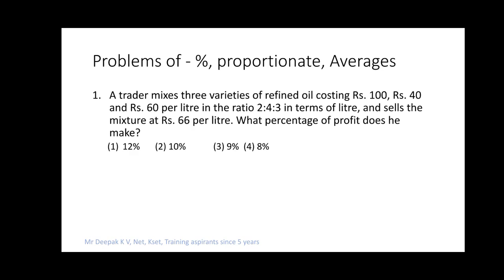A trader mixes three varieties of refined oil costing Rs. 100, Rs. 40, and Rs. 60 per liter in the ratio 2:4:3 and sells the mixture at Rs. 66 per liter. What percentage of profit does he make?